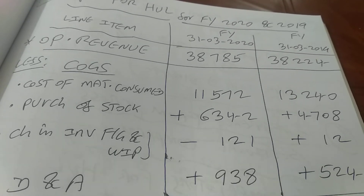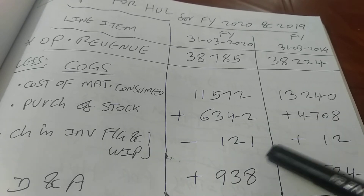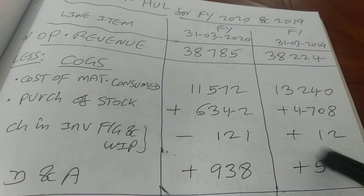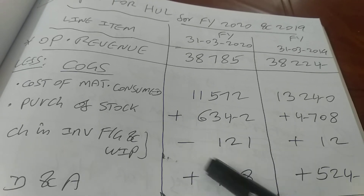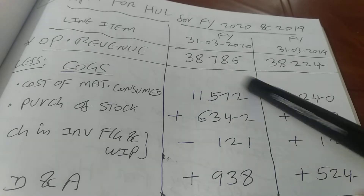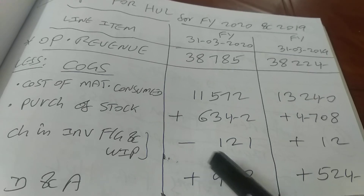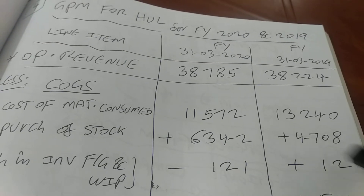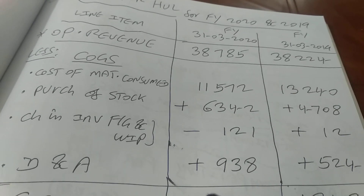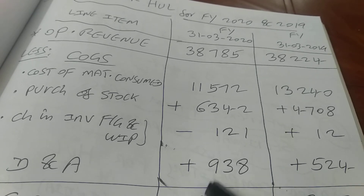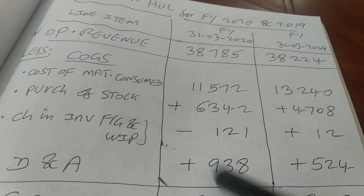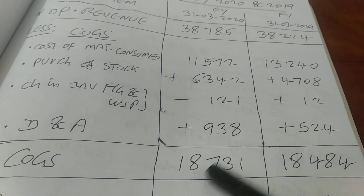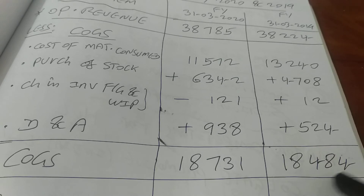Next, adjust for changes in inventory of finished goods and WIP. If inventory has come down, the product is being sold, so transfer from balance sheet to income statement under expenses — it gets added: plus ₹12 crores for 2020. If inventory is going up, the sale is postponed and that number is already included, so you subtract it: minus ₹121 crores for the previous year. Finally, add depreciation and amortization: ₹938 crores for 2020 and ₹524 crores for the previous year. Summing all four components gives cost of goods sold: ₹18,731 crores for 2020 and ₹18,484 crores for 2019.